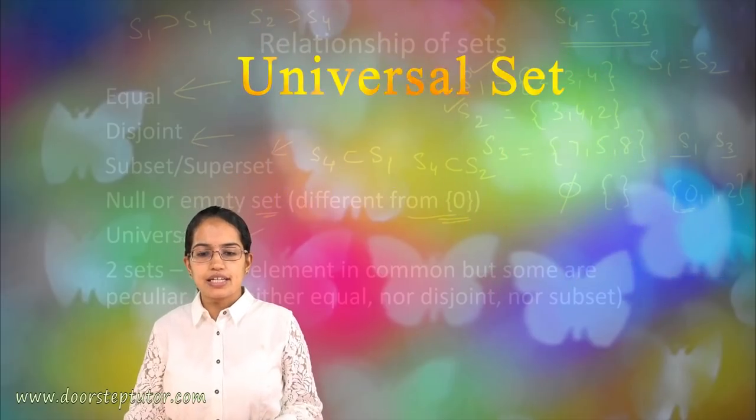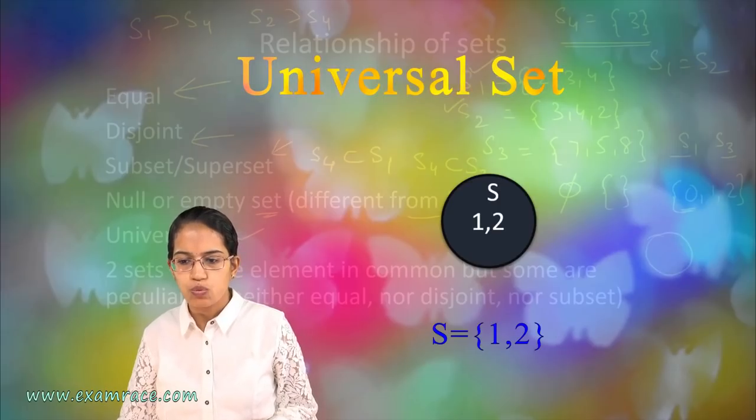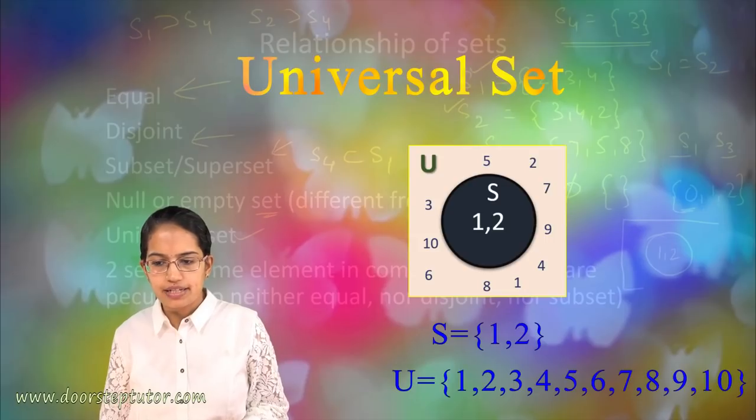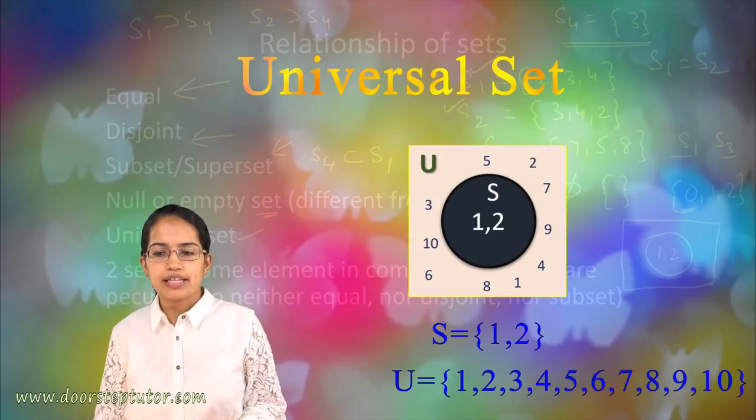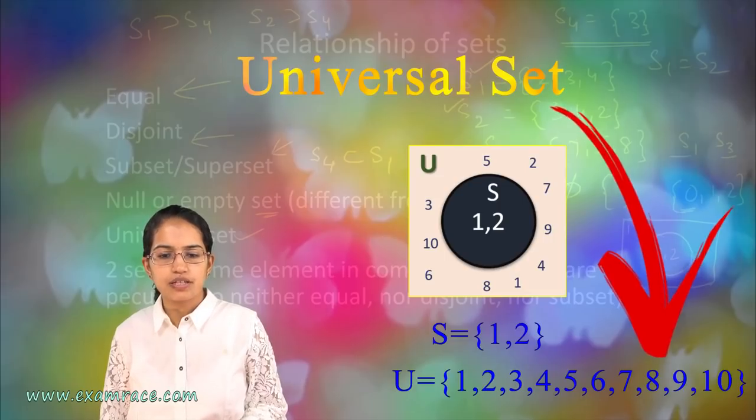Universal set includes everything that's part of the universe. Let's say I have the set 1, 2 when I depict it by a diagram and this is the universe. Anything which is part of 1, 2, 10 in the universe would be the universal set.